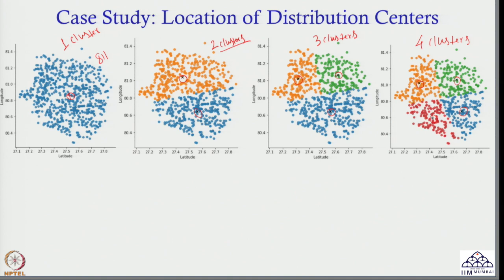As you see, if we keep on increasing the number of clusters, customer responsiveness improves. With only one cluster, all 811 customers are served by a single DC, which takes more time. I also have to build up huge inventory, so my inventory holding cost goes up and my response time increases because customers are spread across the region being served from just one distribution center.